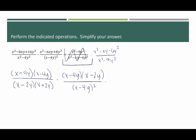Over here we have x squared minus xy minus 6y squared. That factors as x minus 3y times x plus 2y, since negative 3 and positive 2 multiply to negative 6 and add to negative 1. And x squared minus 9y squared is a difference of squares, factoring into x minus 3y times x plus 3y.